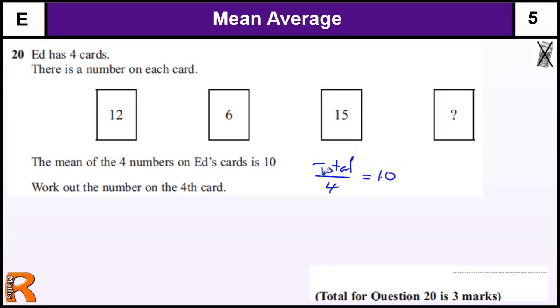So that tells us what our total is going to be. If the total divided by 4 is 10, the total must be 4 times 10, which is 40.